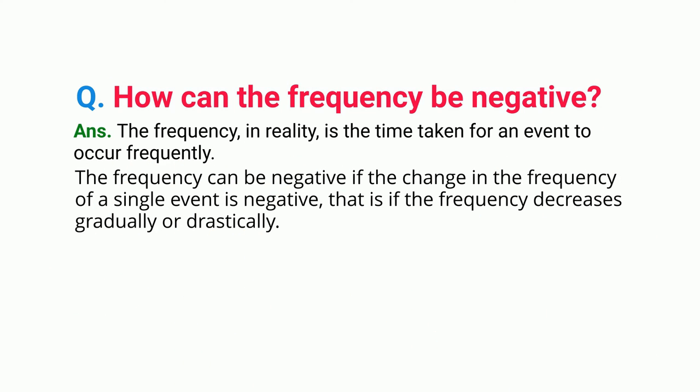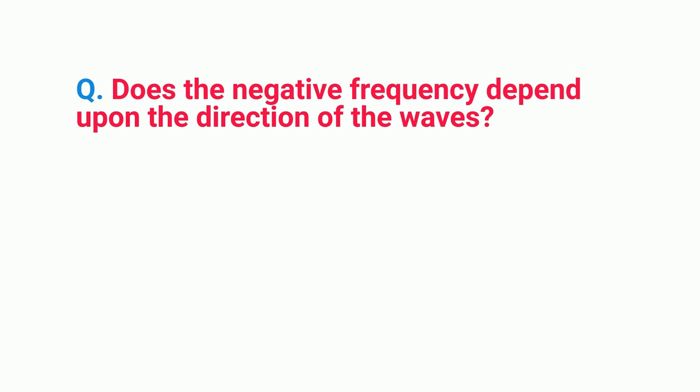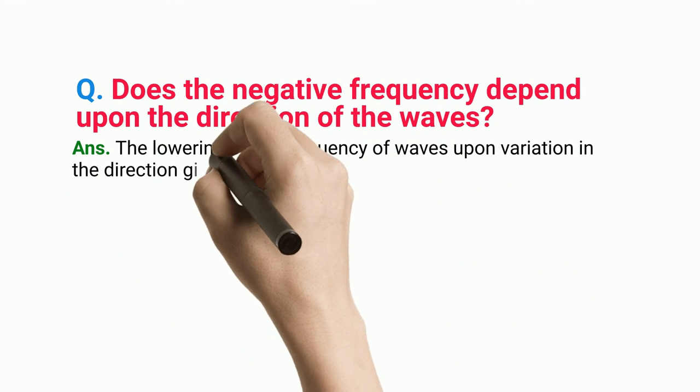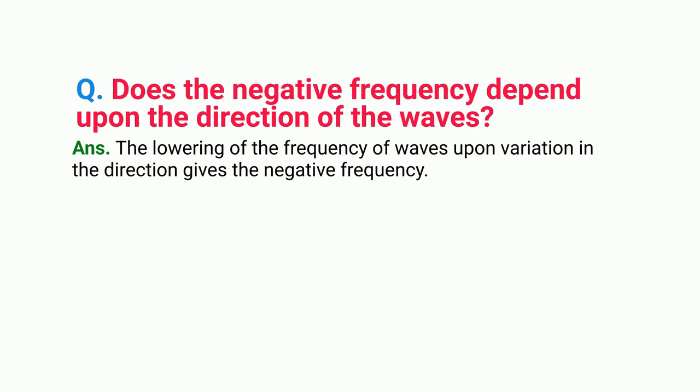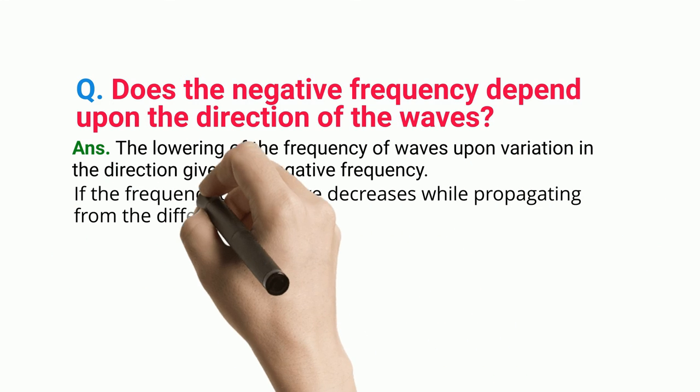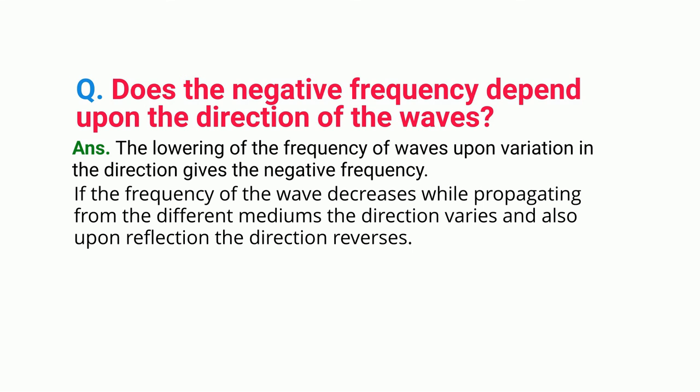Does the negative frequency depend upon the direction of the waves? Answer: The lowering of the frequency of waves upon variation in the direction gives the negative frequency. If the frequency of the wave decreases while propagating from different mediums, the direction varies, and also upon reflection the direction reverses.